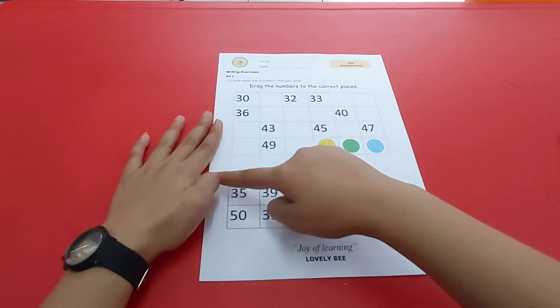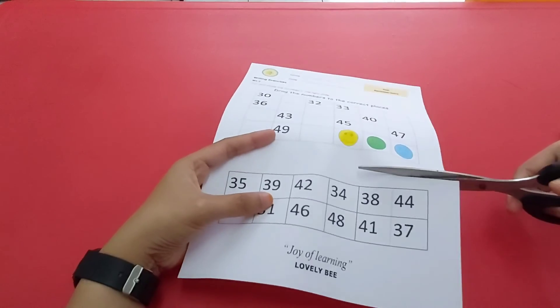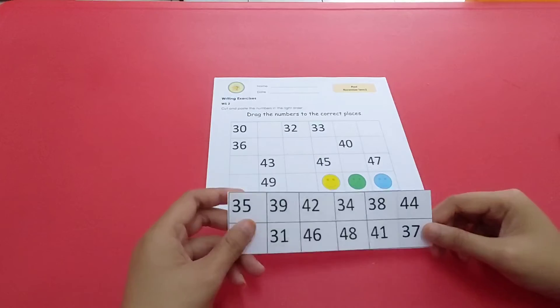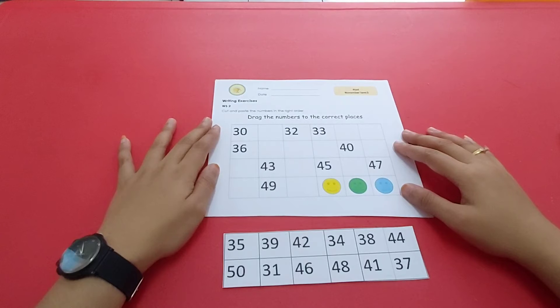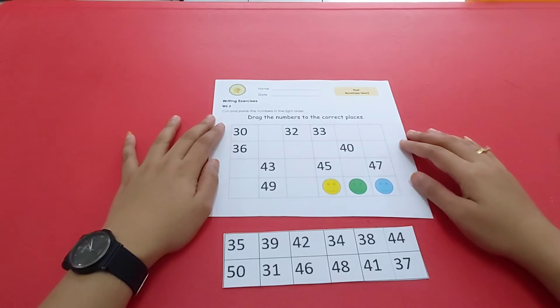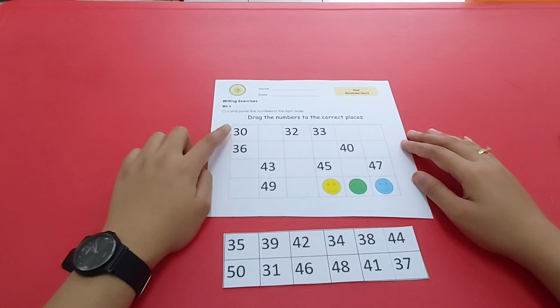First, let's cut this attachment. Like this. Now, let's take a look at the number. What number is this? Yes, it's number 30.